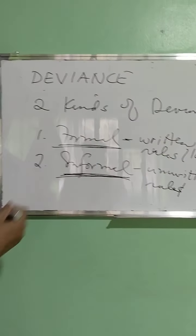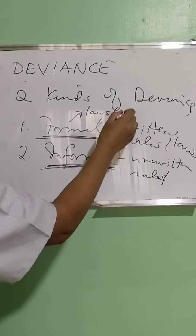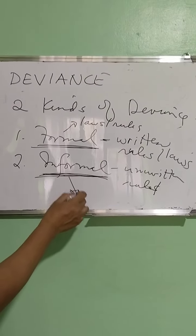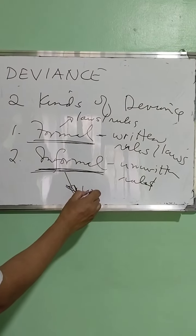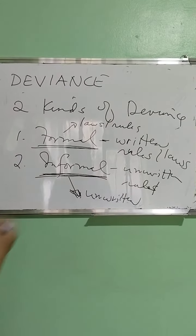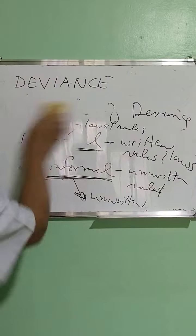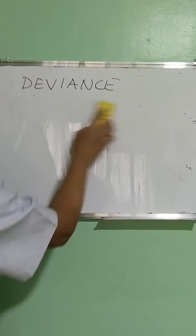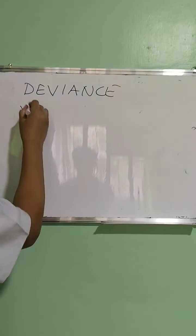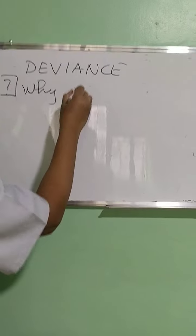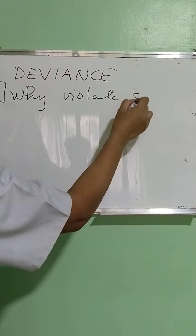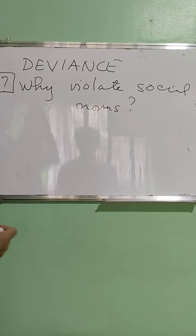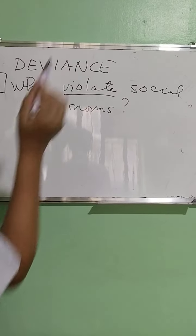Remember that. That is the distinction between the two. Now, the next question: how come people violate certain norms or rules? Why violate? My question here is, why violate social norms? What are the theories or reasons why an individual violates certain norms?